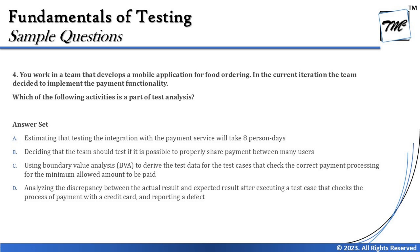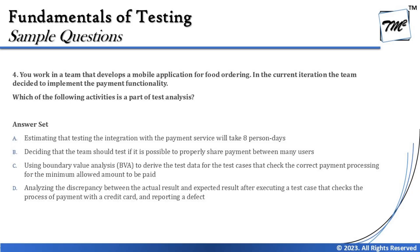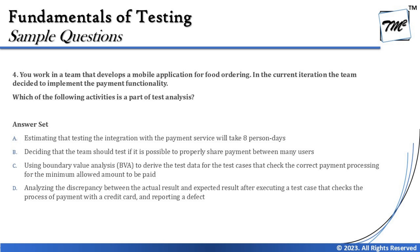Option B says: 'Deciding that the team should test if it is possible to properly share payment between many users.' Option C mentions 'using boundary value analysis' — at this point you should recognize that BVA is a technique used during the test design phase, where you write test cases. This is still the test analysis phase, not the time for techniques, so Option C is eliminated.